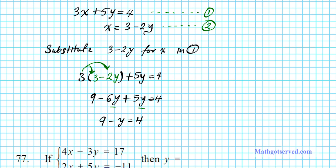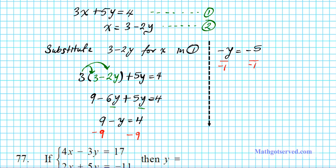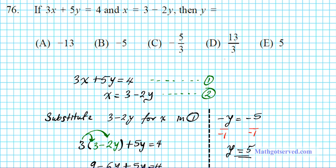We can simply subtract 9 from both sides. The 9s cancel, leaving negative y equals 4 minus 9, which is negative 5. To address the negative sign, we divide both sides by negative 1, and our final answer is y equals 5. The correct answer is option letter E.